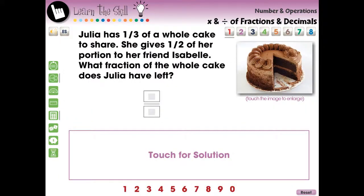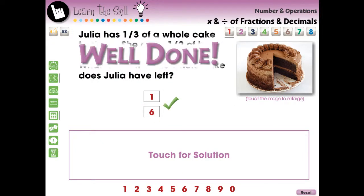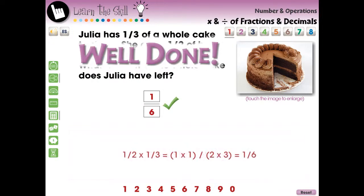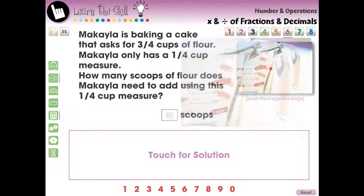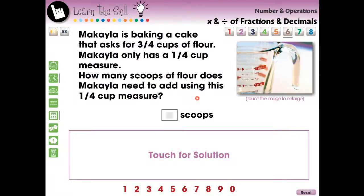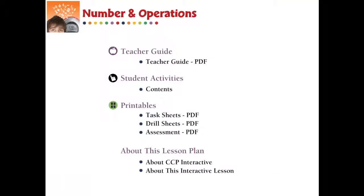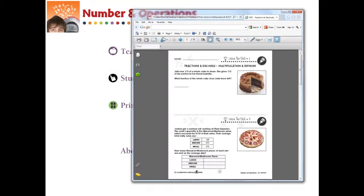The Learn the Skills section contains eight screen pages of real-world task problems. These questions include a touch-for-solution option to give a step-by-step breakdown of how the answer is reached, and are delivered in the form of fill-in-the-blank questions. Printable PDF versions of the task questions are available at the menu screen.